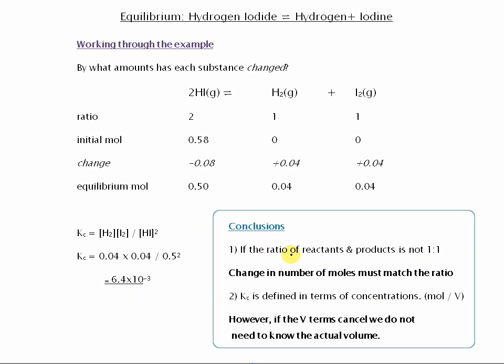So just to conclude here, if the ratio of reactants and product is not 1 to 1 throughout, then the change in the number of moles must match the ratio. So here we see the change values there, 0.08, 0.04, 0.04. They match a 2 to 1 to 1 ratio.